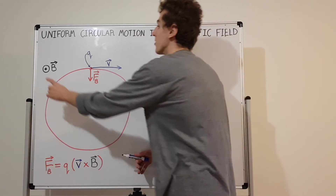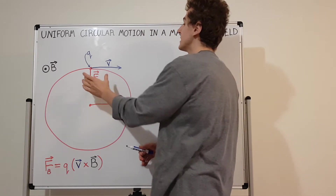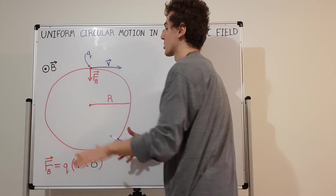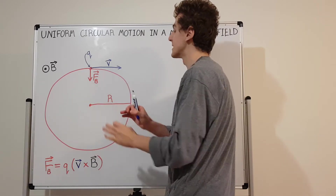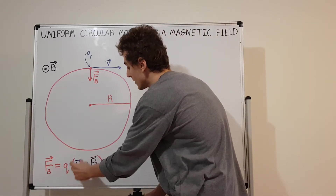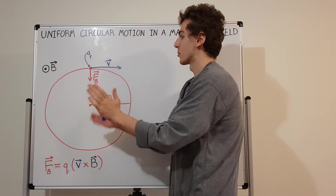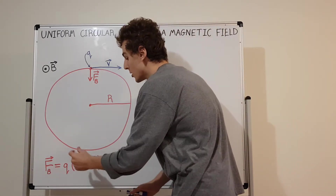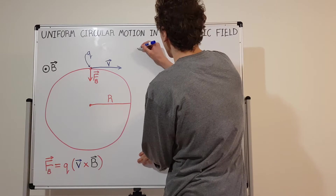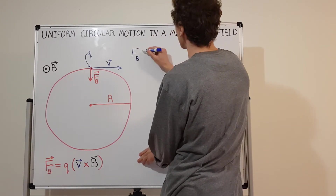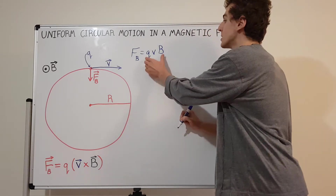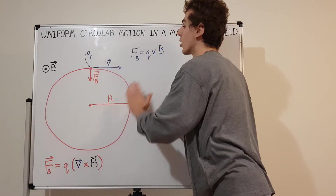We've said this B field is perpendicular to V, which means the force also has to be perpendicular to both of these. So these guys are mutually perpendicular — everyone is 90 degrees away from the other. That allows us to use a property of the cross product: if all of these vectors are mutually perpendicular, you can just take the magnitudes of all of them to get the magnitude of the result. So the magnitude of the force due to the magnetic field is equal to Q V B.